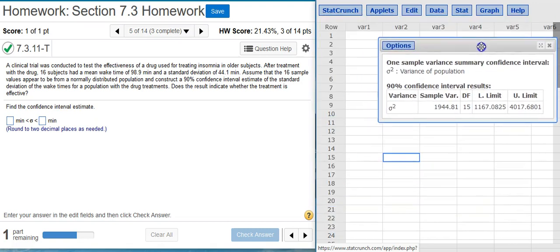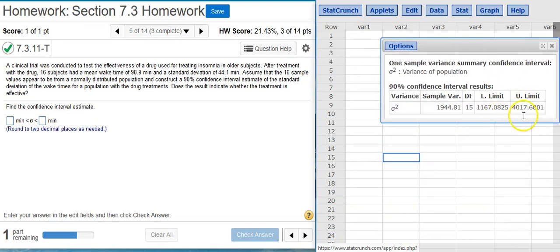And here we have the limits, the lower and upper limits, for confidence interval on the variance. We want one for the standard deviation. So to do this, we're just going to take the square root of those limits, since the square root of the variance is the standard deviation.